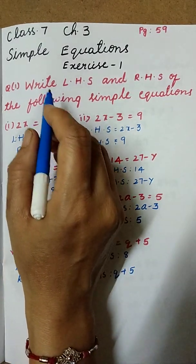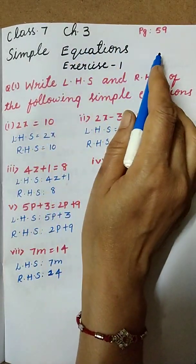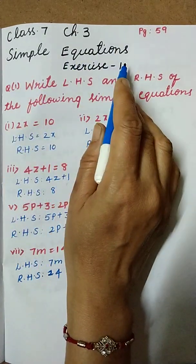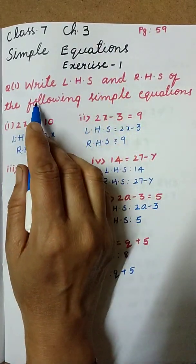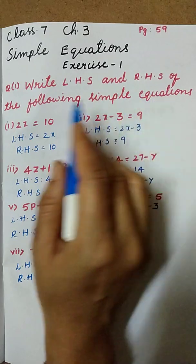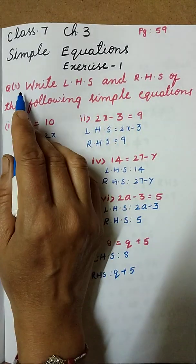Good morning children. Today I am going to explain Class 7, Chapter 3, page number 59, Simple Equations, Exercise 1. Write LHS and RHS of the following simple equations. This is the first question.